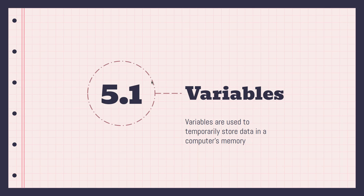Hello guys, welcome back to the channel. In today's video we're going to continue with our introduction to programming with Python series. In this tutorial we're going to look at what variables are in programming — and this knowledge is not just for Python, variables exist in all other programming languages. So what's a variable? You can think of a variable as a simple container that is used to store data temporarily in the computer's memory.